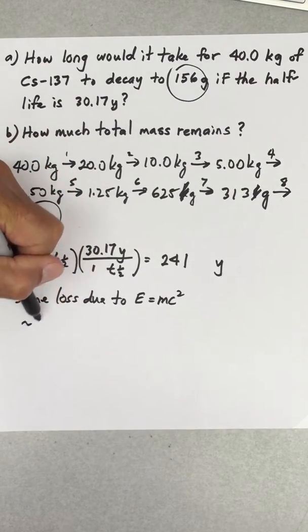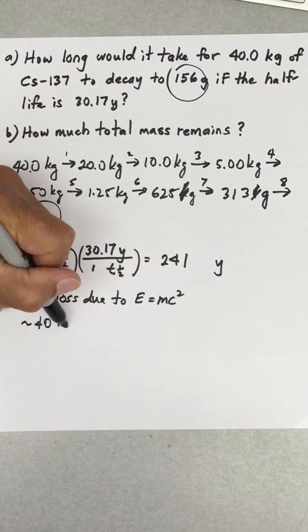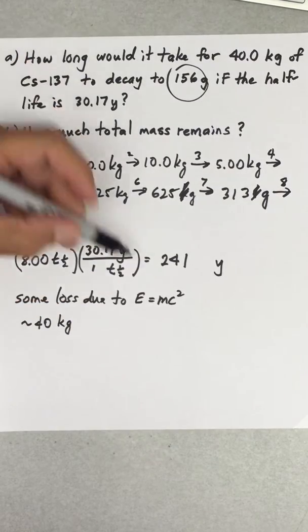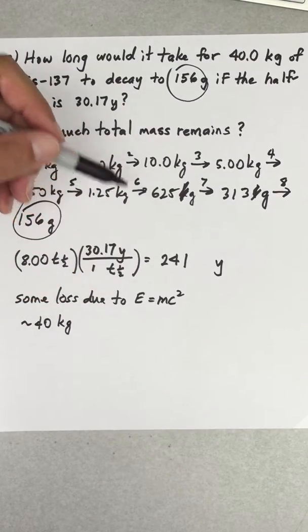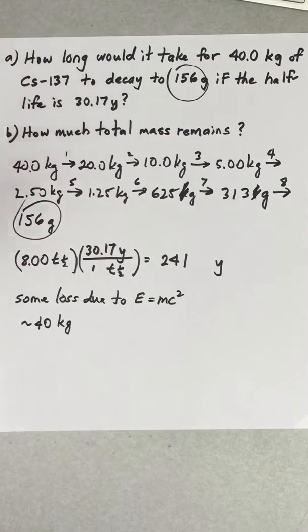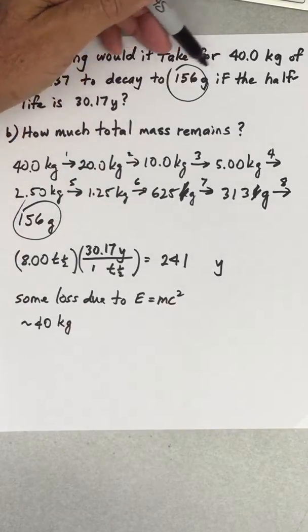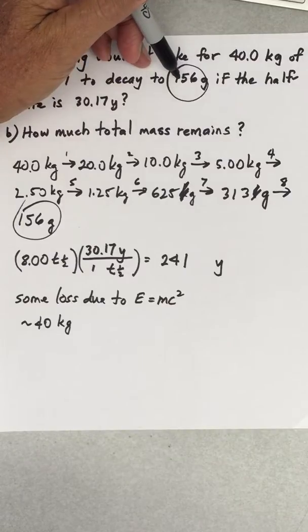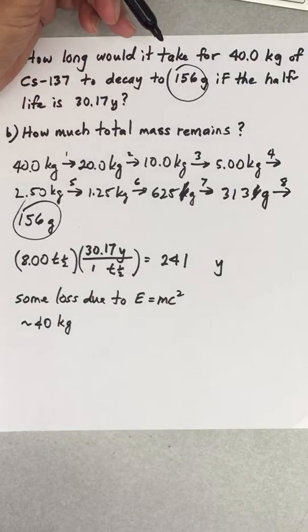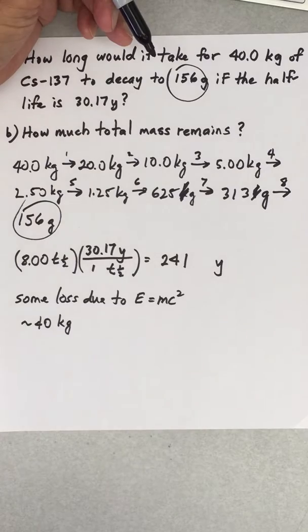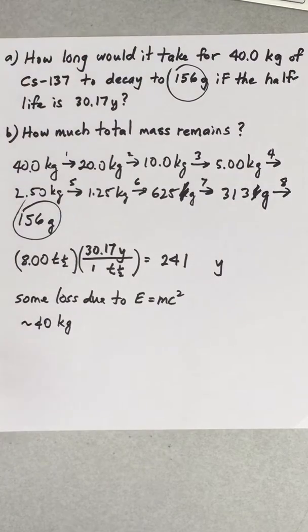I'm not going to say 40.0 kilograms, but I'm going to say the total mass is going to be about 40 kilograms because I really don't know how much mass would be lost. So again, we're simply considering the law of conservation of mass. You might be thinking, well if we started off with 40 kilograms and now we only have 156 grams, where did the rest of it go?